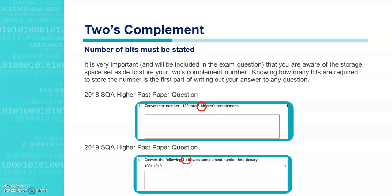The 2018 past paper had as the first question, worth one mark: convert the number minus 120 into 8-bit two's complement. The 2019 past paper said for question number one, worth one mark: convert the following 8-bit two's complement number into denary. So this is what we're going to show you how to do now.